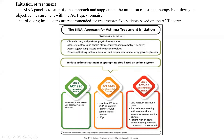An example of a leukotriene receptor antagonist is montelukast. Montelukast is a great option given in clinics all the time. It is indicated for patients who are reluctant to use inhaled corticosteroids or continue to have side effects from inhaled corticosteroids. However, montelukast is less effective than low-dose inhaled corticosteroids in achieving asthma control and reducing the risk of attacks.